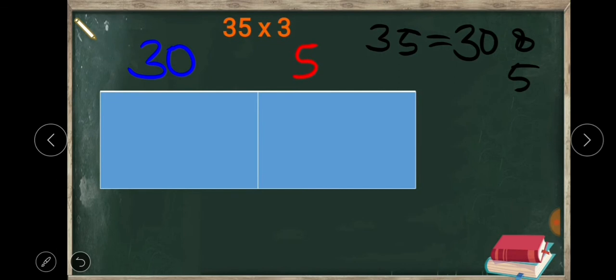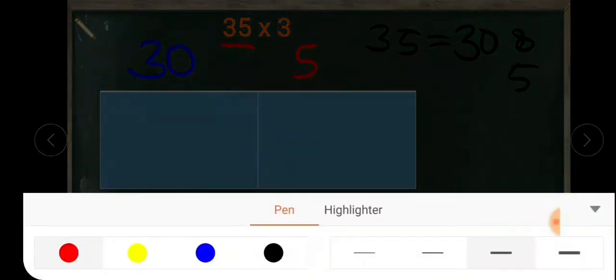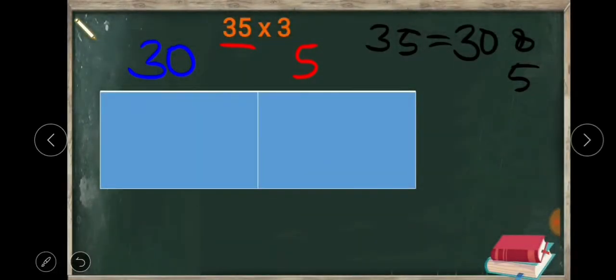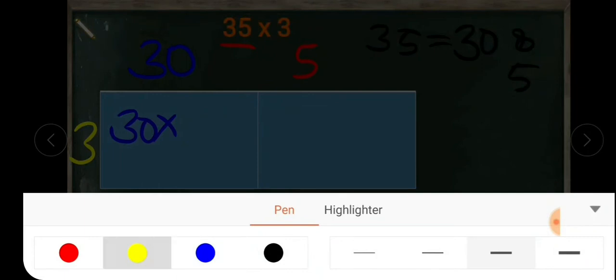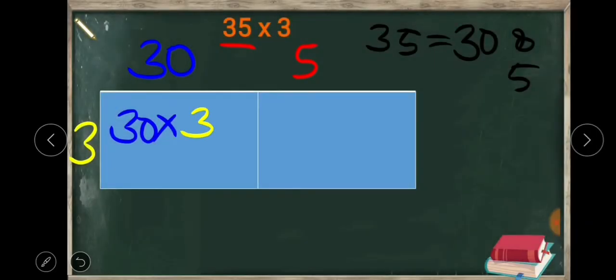First we draw 2 columns and 1 row, because the multiplicand has 2 digits and the multiplier has 1 digit. The multiplier is 3 — we can write 3 on either side. This is the column of 30. So here we need to do 30 into 3.